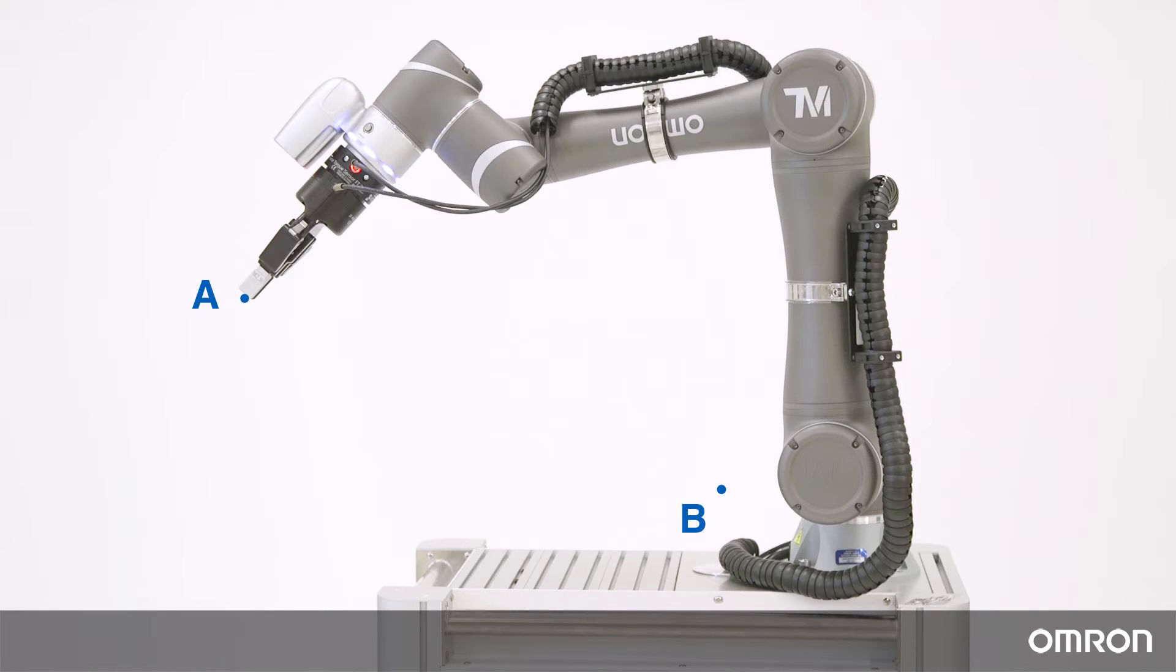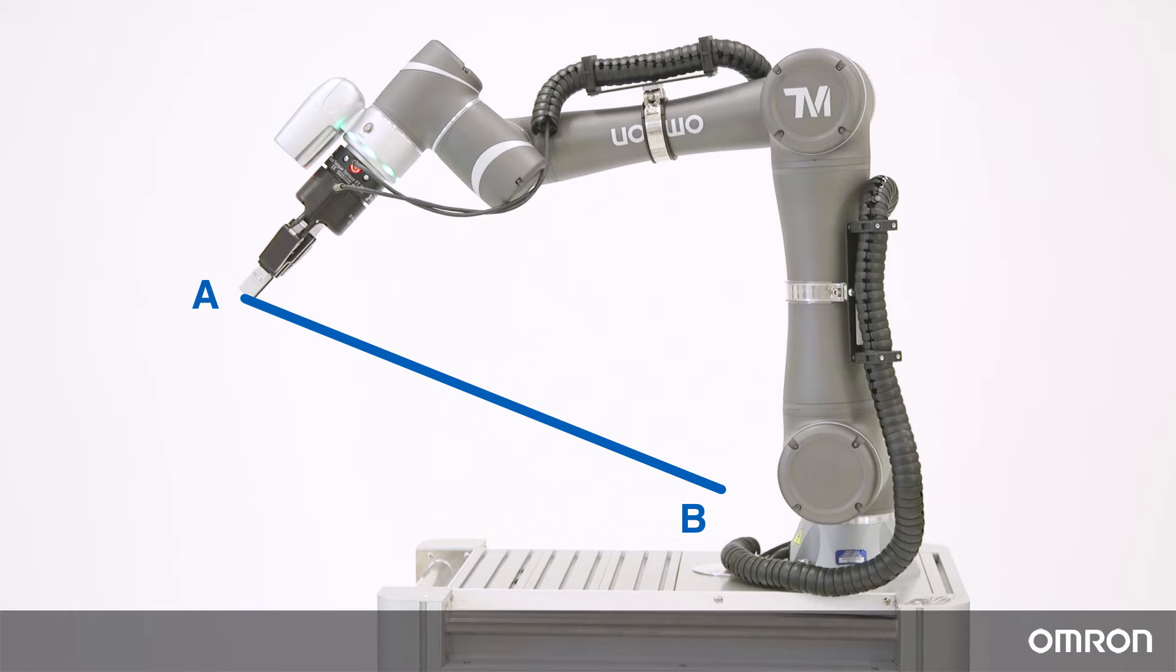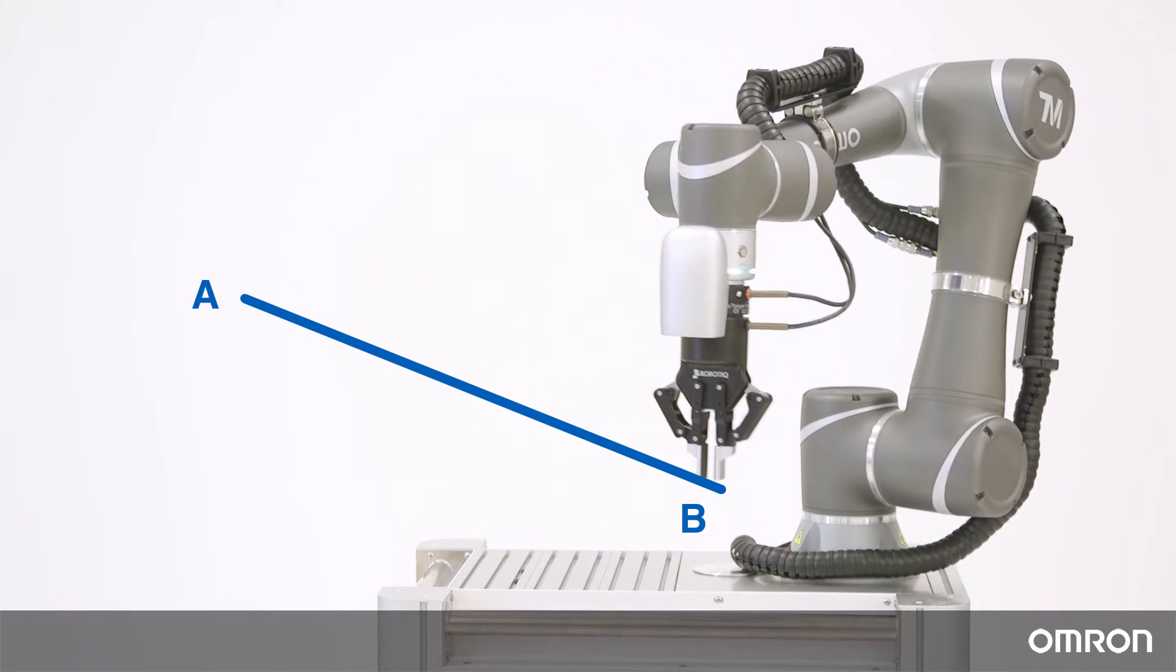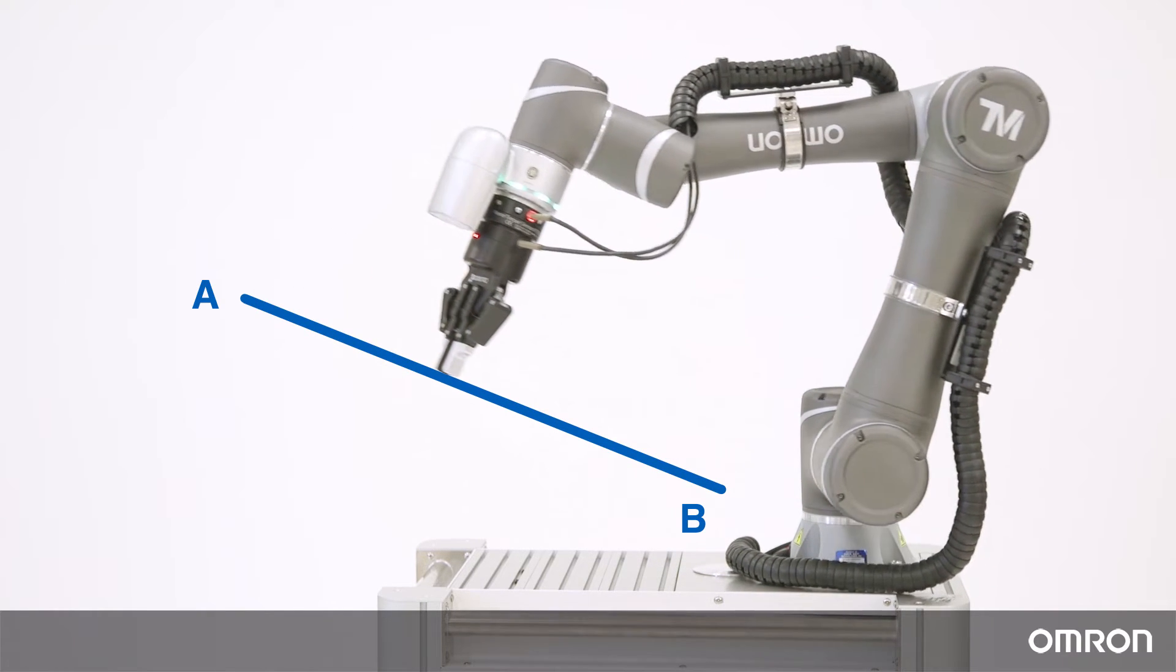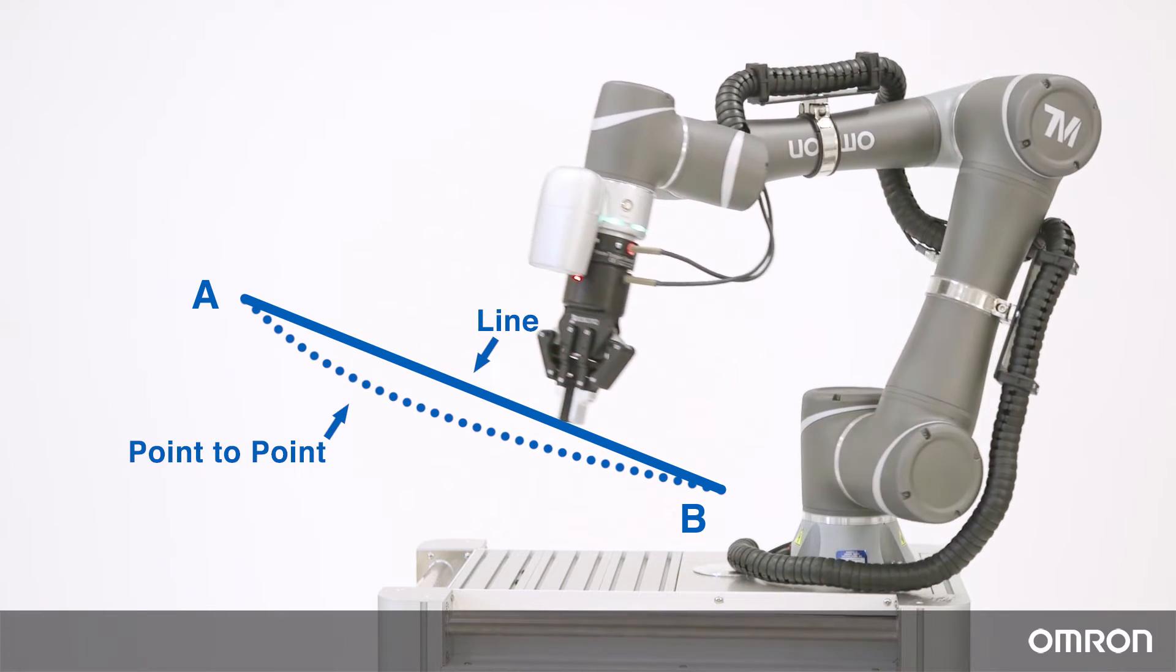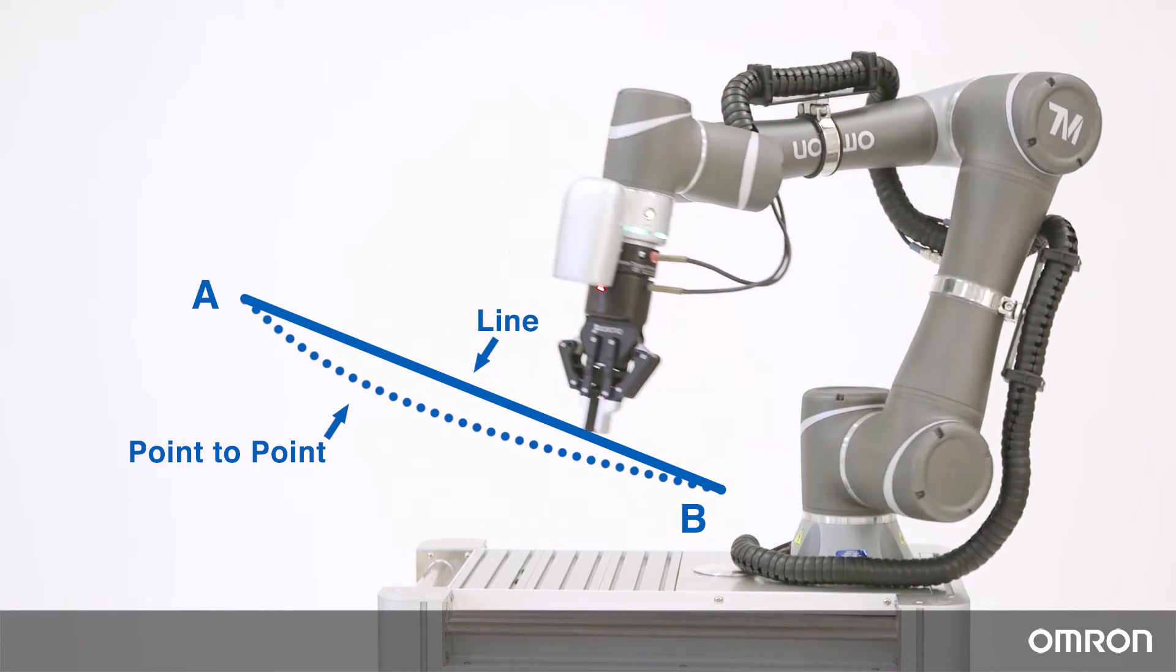Now let's discuss line motion. Line motion is path-dependent and will move in a straight line from point A to point B. Line motion is preferred when trying to avoid collisions with obstacles that could be adjacent to the path AB. Here is an example of linear motion versus point-to-point.